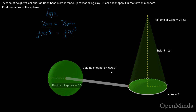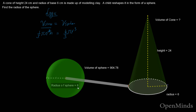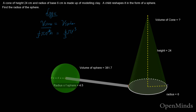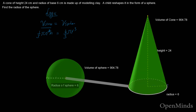The radius of the sphere increased to six. The original cone had all its clay pumped into making a sphere. The question asks: find the radius of the sphere. The volume of the cone was 904.78, and the volume of the sphere formed is again the same — so the logic is that these two volumes must be equal.